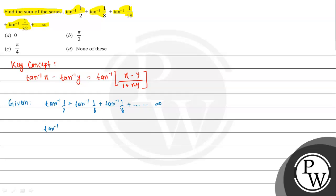We rewrite each term of the series using this pattern. For example, tan inverse 1/2 corresponds to 1 divided by (2·1²), tan inverse 1/8 corresponds to 1 divided by (2·2²) since 2² is 4 and 4×2 is 8, and tan inverse 1/18 corresponds to 1 divided by (2·3²) since 3² is 9 and 9×2 is 18. So the general term is tan inverse of 1 divided by 2n².